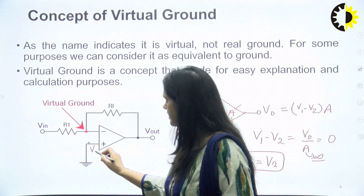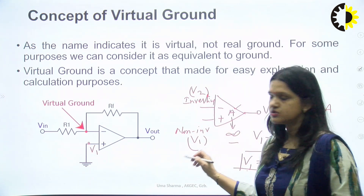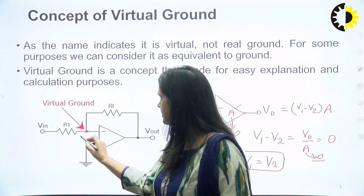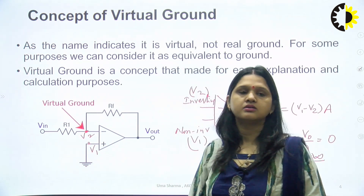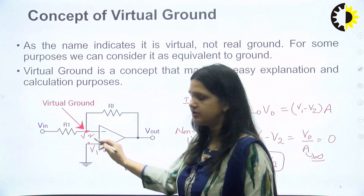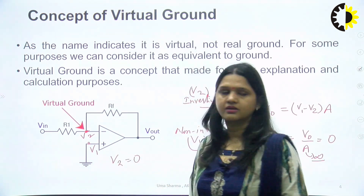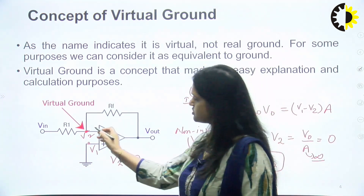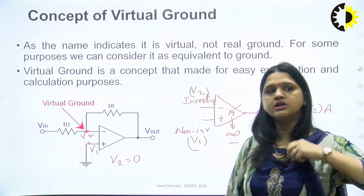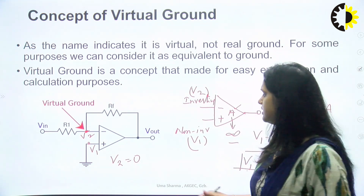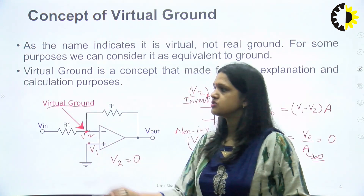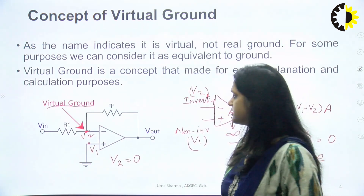V1 is the voltage at the non-inverting node. Since V1 = V2, the voltage at the inverting node also equals V1. If the non-inverting node is at ground, then V2 = 0. But the inverting terminal is not actually connected to ground — mathematically V1 = V2, which is why we say this node is at virtual ground. It is not at real ground, but at virtual ground.